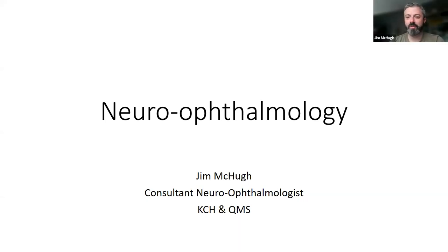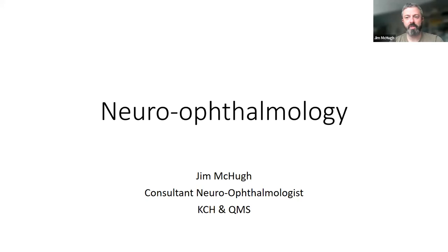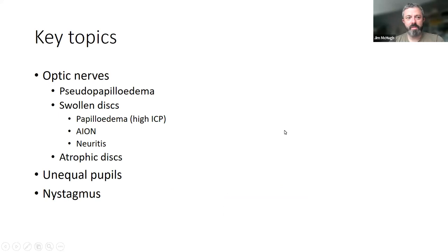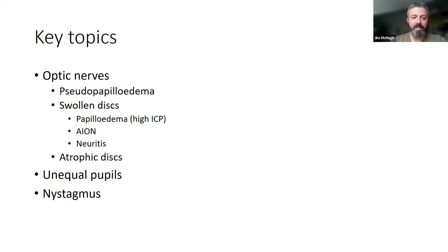I'm very keen for people to chip in with contributions, suggestions, and questions. If that seems to be running away with us, then maybe we'll have to go back to a more didactic system, but I'm quite keen for people to chip in as and when. I'm going to concentrate mostly on optic disc and optic nerve stuff because that's most of my job. So: optic nerves, pseudopapilloedema, papilloedema, ischaemic optic neuropathies, neuritis, atrophic discs, neurological field defects, and if there is time, pupils and nystagmus — though those are huge topics.